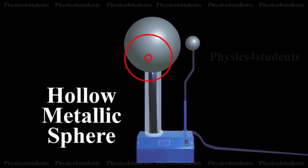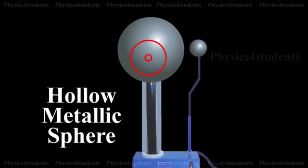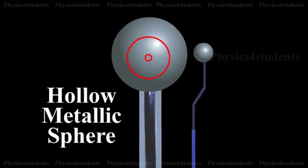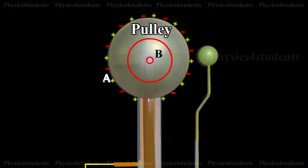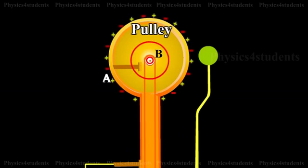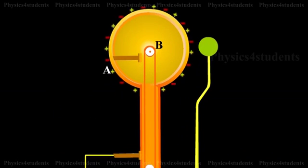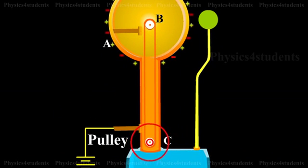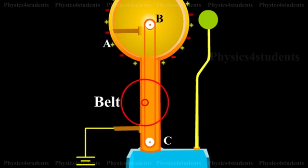A hollow metallic sphere A is mounted on insulating pillars as shown in the animation. A pulley B is mounted at the center of the sphere and another pulley C is mounted near the bottom. A belt made of silk moves over the pulleys.